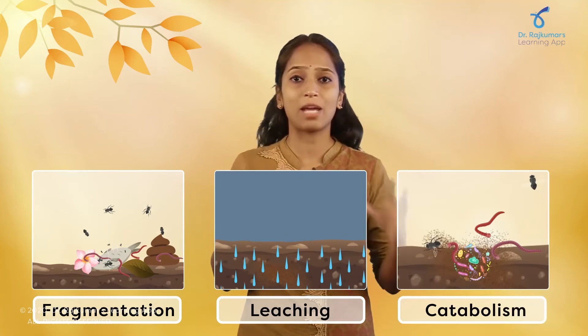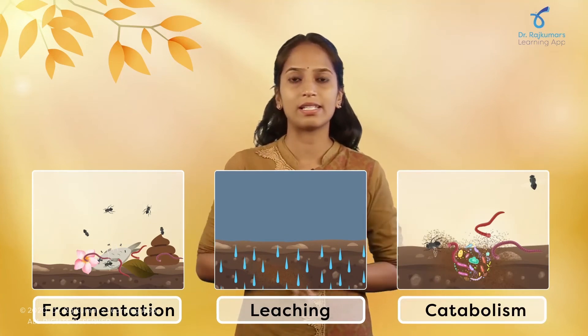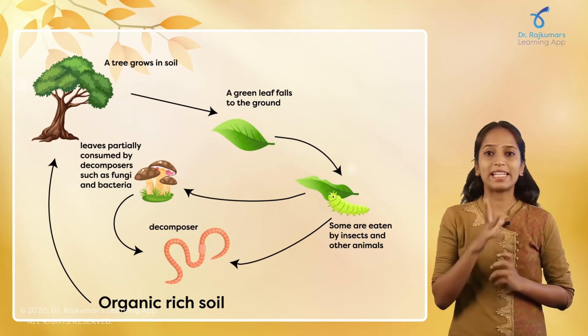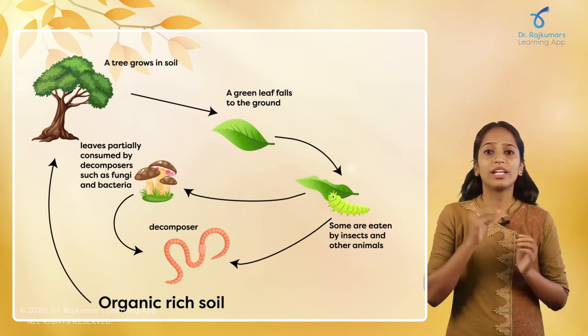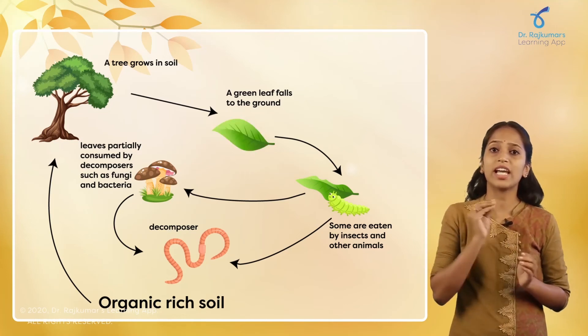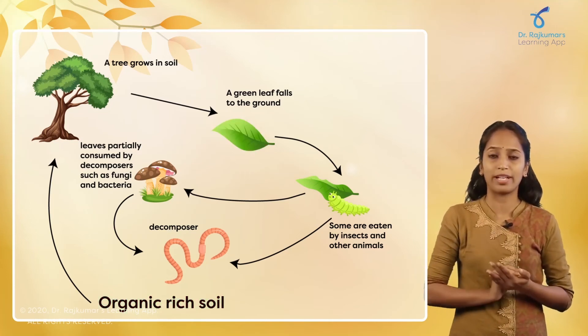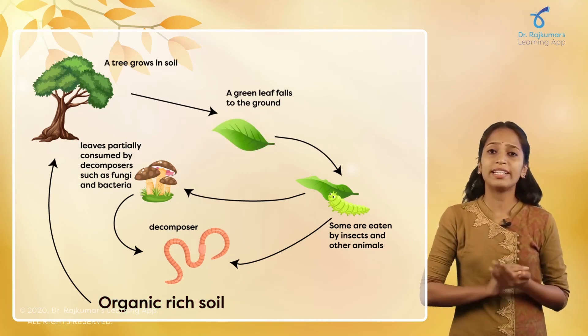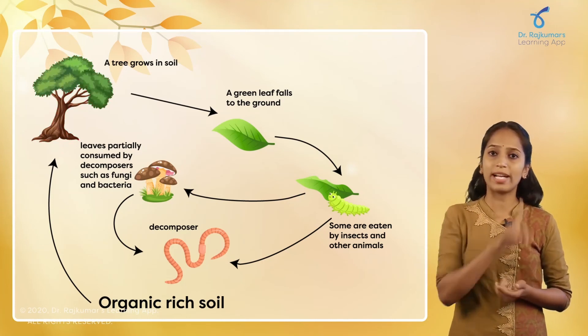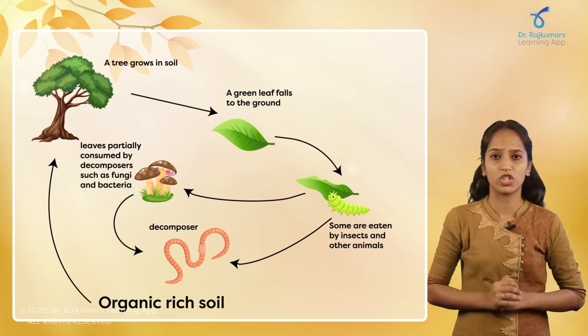All of these processes — fragmentation, leaching, and catabolism — operate simultaneously on the detritus. Decomposition is basically a cycle: even though the plant has shed its leaves, it ultimately enriches the soil with nutrients, which are in turn utilized by the plant again. It is a never-ending cycle that happens in nature.